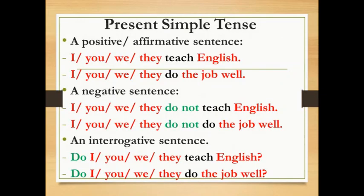Present simple tense using 'do'. First, we have a positive or affirmative sentence. I, you, we, they teach English. I, you, we, they do the job well. Of course, the present simple is used to talk about habits, facts, and jobs.